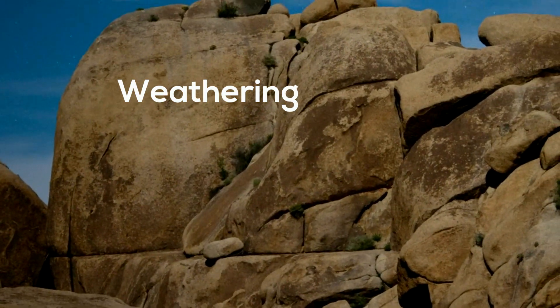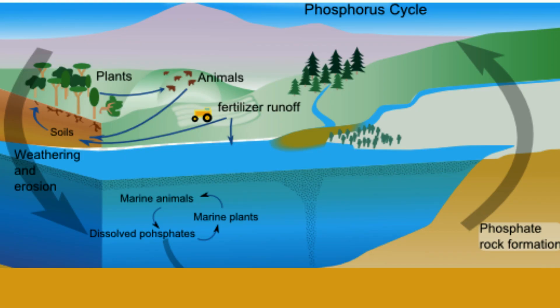Step 1: Weathering. Phosphorus is found in rocks. Weathering, along with rain, breaks down the phosphorus in rocks and it travels to the soil and into water sources.